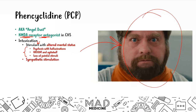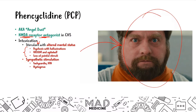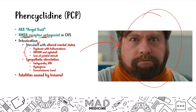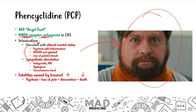PCP also causes sympathetic stimulation — tachycardia and hypertension. Notably, patients present with nystagmus, which distinguishes it from other substances where we mainly discuss mydriasis or miosis. Patients can also develop coma and seizures, though these are rarer. Fatalities are common due to trauma: the combination of psychosis, loss of pain sensation, and sympathetic stimulation can cause patients to dissociate and engage in dangerous behavior, with death possible from trauma or cardiac causes. It's one of the most dangerous drugs discussed in this lecture.